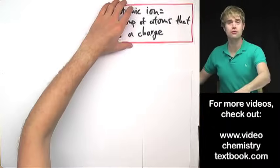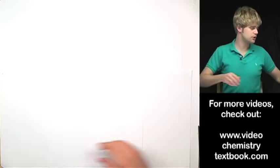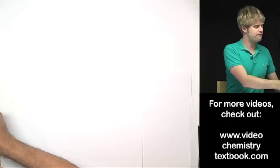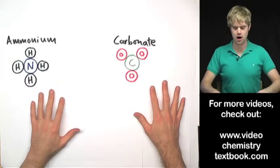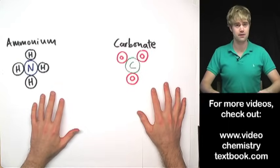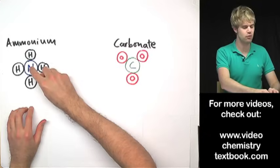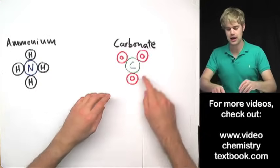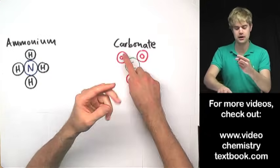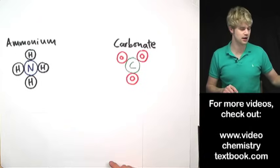Let me show you a few examples of how this actually works. So here are two of my favorite polyatomic ions, ammonium and carbonate. Ammonium here is made up of one nitrogen connected to four hydrogens and carbonate is one carbon connected to three oxygen atoms.